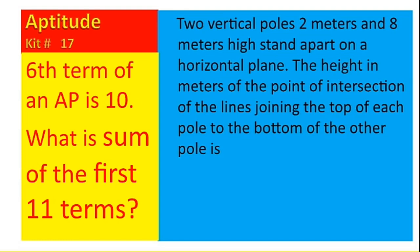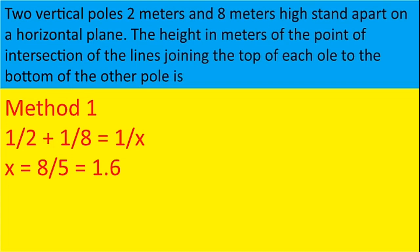The first question on your screen is two vertical poles, two meter and eight meter high stand apart on a horizontal plane. The height in meters of the point of intersection of the line joining from the top to the bottom. First method, what we can do is 1/2 + 1/8 = 1/x. So once we solve, we'll get the answer as 1.6.